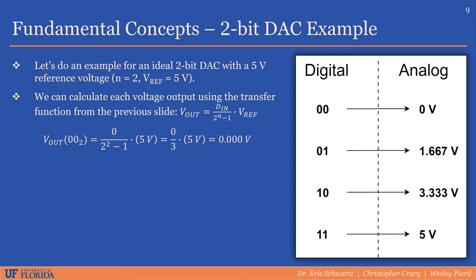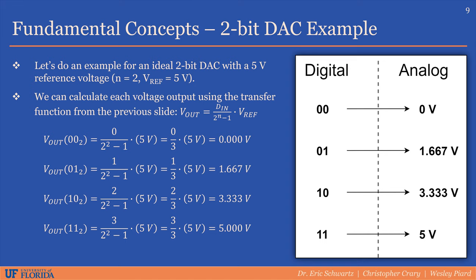Let's start with the digital input value of 0. This one is trivial. If we plug it into the transfer function, we simply get 0 volts. Next, if we input a value of 1, we get 1.667 volts, and so on and so forth for values 2 and 3. The digital value 2 corresponds to 3.333 volts, and finally, the digital value 3 corresponds to 5 volts.